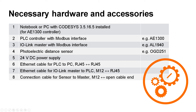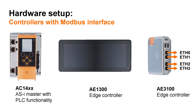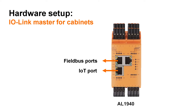Before we get to the hardware setup, let's take a closer look at the controller and the IO-Link master. IFM offers different controllers with Modbus interface. We will use an AE3100 Edge controller with Modbus interface as PLC. The AE3100 controller has four Ethernet interfaces — we will use ETH2 for the connection to the notebook and ETH3 for the connection to the IO-Link master. The AL1940 is a Dataline IO-Link master with two Ethernet ports for Modbus communication and one extra IoT port, which is used for configuring the IO-Link master and connecting to the IT world.